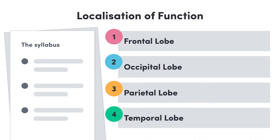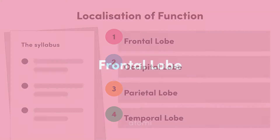Welcome back. This lesson covers localisation of function, which essentially refers to how different parts of the brain work. More specifically, we will be looking at the cerebral cortex and its four lobes. We will be defining the structure and function of the frontal lobe, occipital lobe, parietal lobe and temporal lobe. Let's get started.